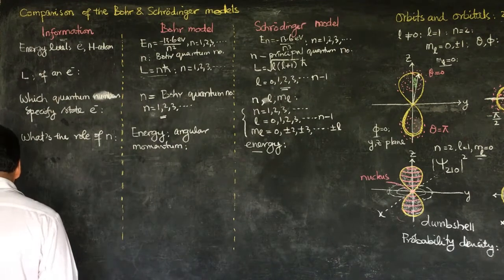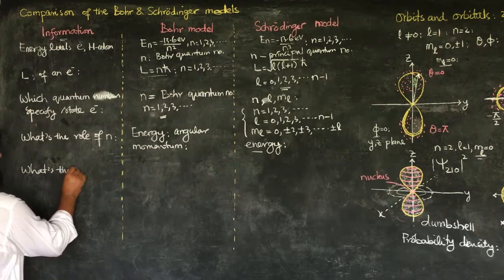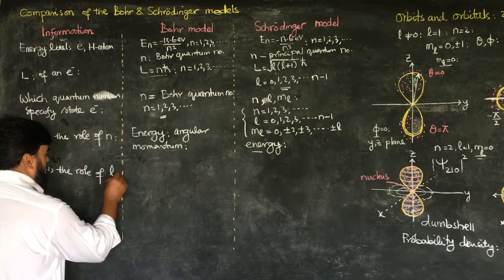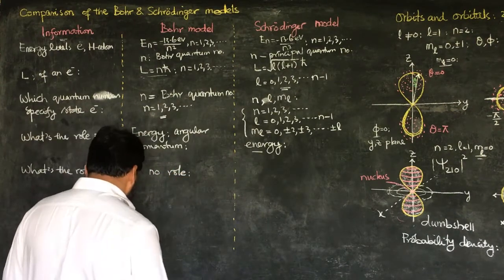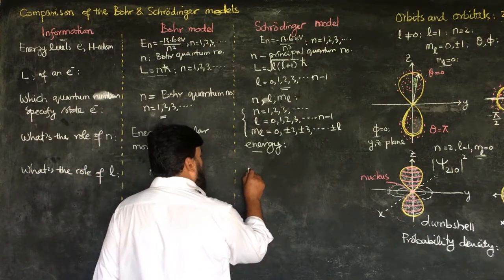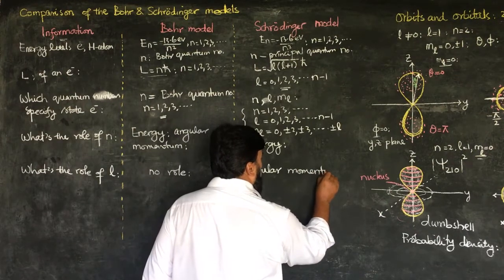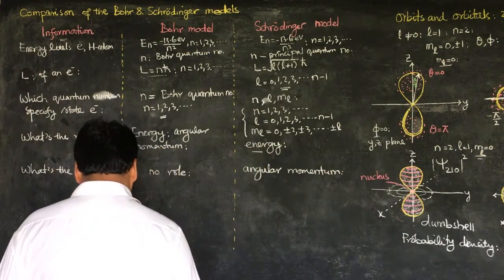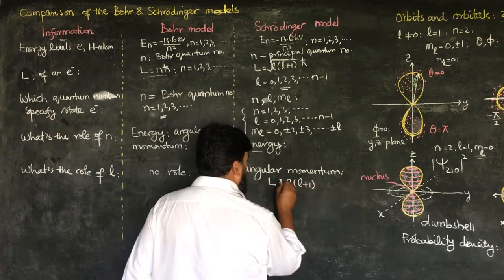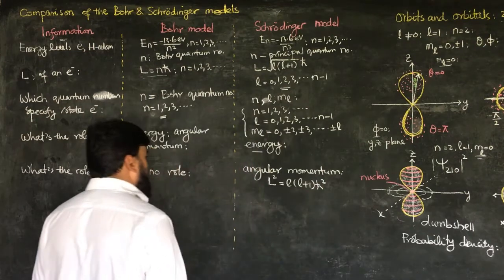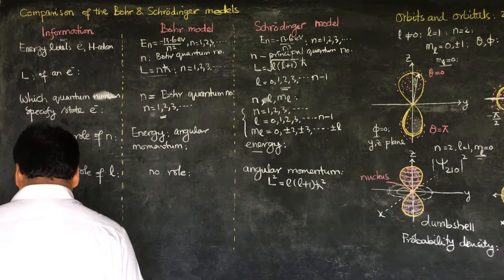If I ask about the role of l: in the Bohr model there is no l, so there is no role for it. In the Schrödinger model, l plays a role in calculating the magnitude of the orbital angular momentum of the electron. Specifically, L squared equals l(l+1) h-bar squared, so the square of the magnitude of the angular momentum is determined by l.